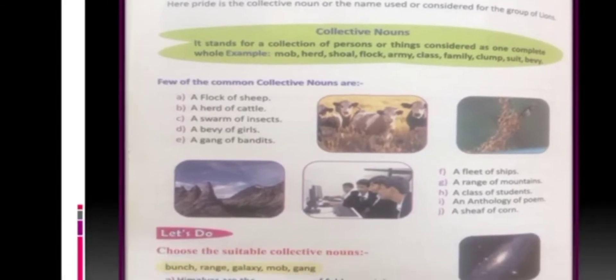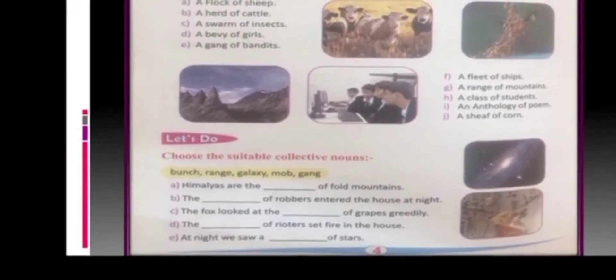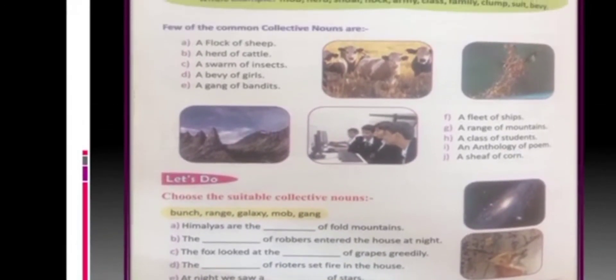Now, let's move ahead to the exercise given on the same page number 4. I want you all to write the answer simultaneously with your HB dark pencil. A part. The question is, choose the suitable collective nouns. The nouns given in this yellow box is bunch, range, galaxy, mob, gang.